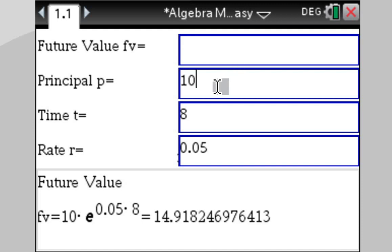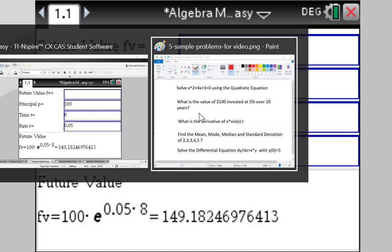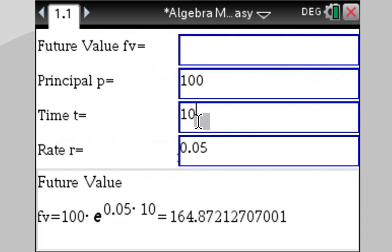Enter 100. What did we say? Over 10 years at 5%. Voila! $164.87 is our value in 10 years from now.